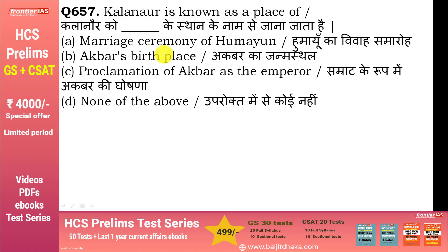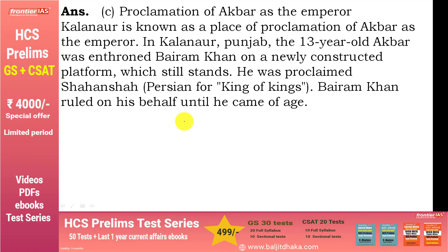Kalanar is known as the place of Proclamation of Akbar as the Emperor — option C. यह आपको ध्यान है: 13 साल की उम्र में अकबर को सम्राट बना दिया गया था. यह proclaim किया था बैरम खान ने, और वो शहंशाह बनाया गया — यानि King of Kings. जब तक अकबर की उम्र गद्दी संभालने की नहीं हुई, तब तक बैरम खान ने Regent का काम किया.